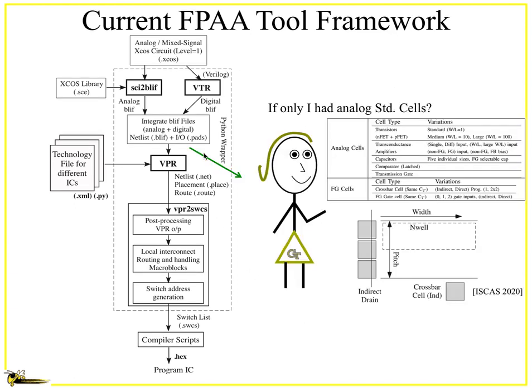You might notice that with a netlist and BLIF, there's a secondary possibility: if you had standard cells, you could take this kind of definition and eventually go to something that's actual hardware. That is something we're working on — initial thoughts on standard cells are being explored, and it's likely a tool we'll talk about in the future.